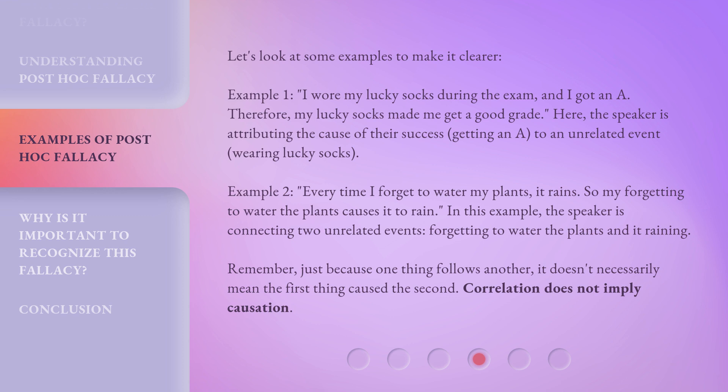Example 2: Every time I forget to water my plants, it rains. So my forgetting to water the plants causes it to rain. In this example, the speaker is connecting two unrelated events — forgetting to water the plants and it raining. Remember, just because one thing follows another, it doesn't necessarily mean the first thing caused the second. Correlation does not imply causation.